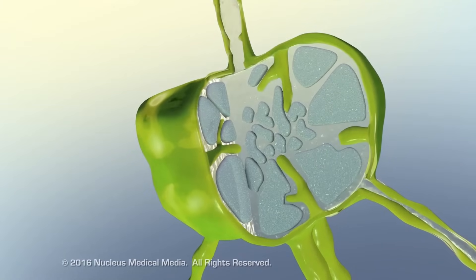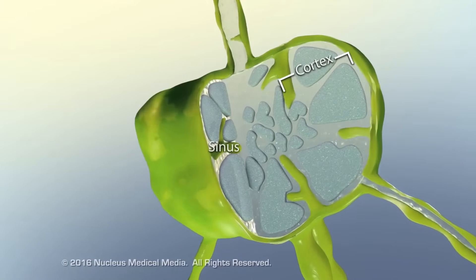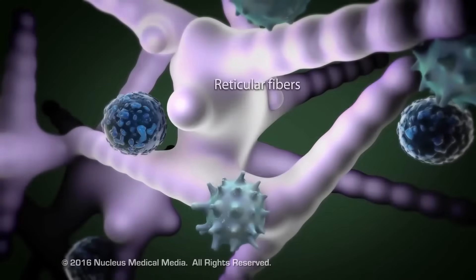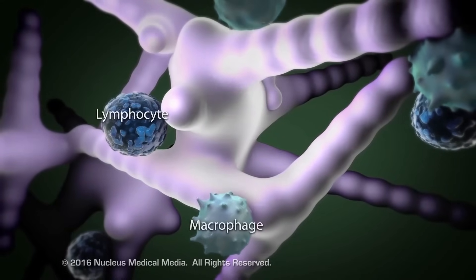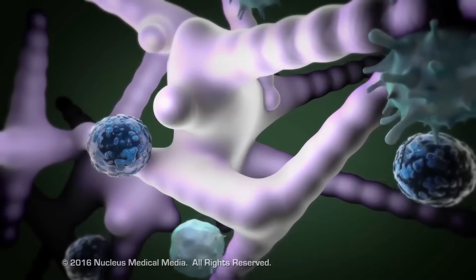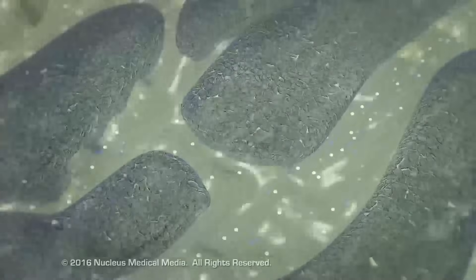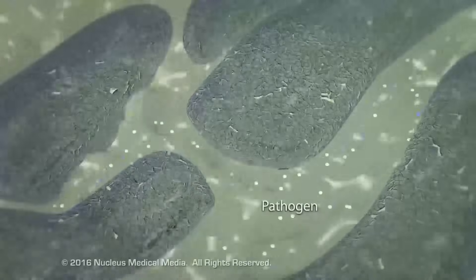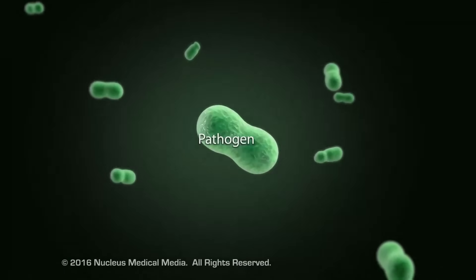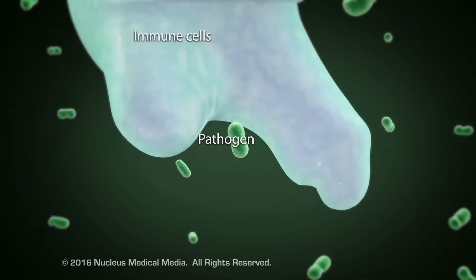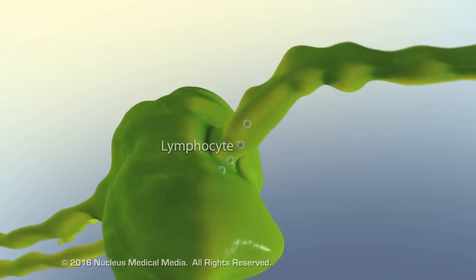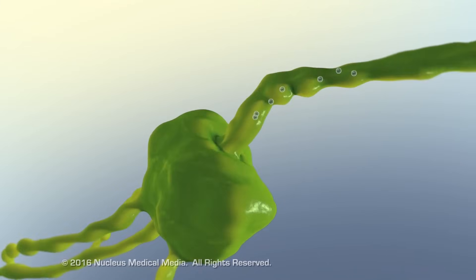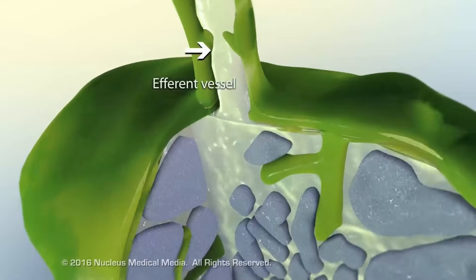Inside a lymph node, sinuses connect the cortex, comprised of lymphocyte follicles, and the medulla dotted with lymphocytes, macrophages, and other antigen-presenting cells. As the lymph trickles through the node, infectious pathogens and other harmful cells, such as cancerous tumor cells, encounter the immune cells, which either destroy them or retain them until an immune response can be mounted to target the infection outside the node.